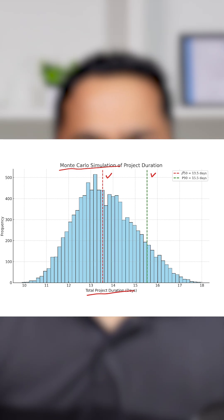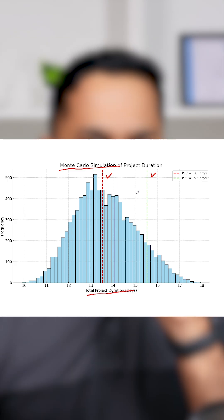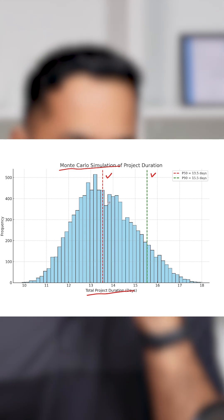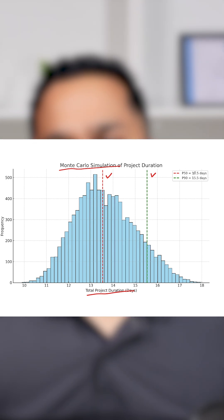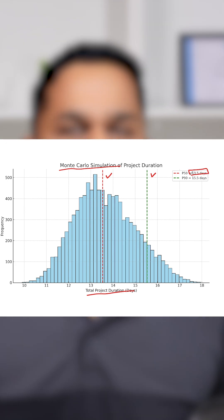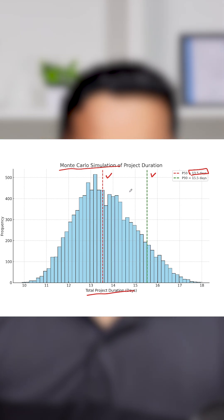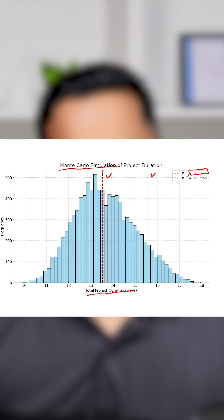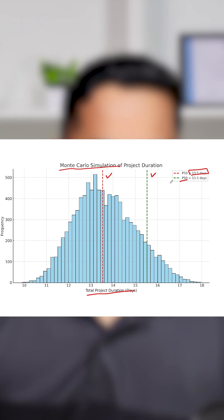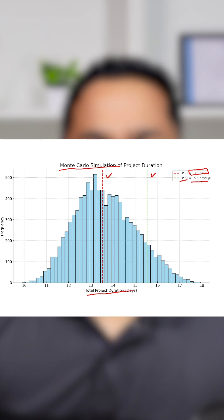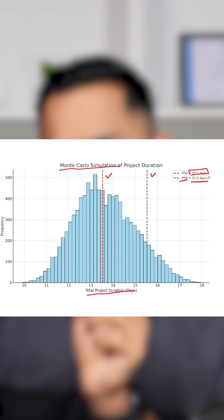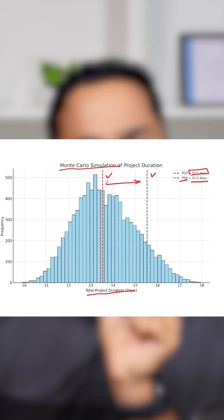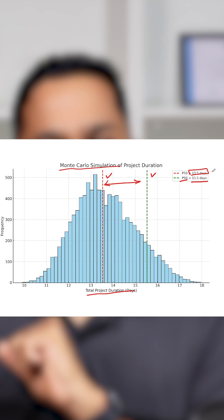The red line talks about P50, which means there's a 50% probability that the project might get completed in 13.5 days. The green line says that there's a 90% chance that the project might get completed in 15.5 days. So now you have an understanding that there's a range of 50% to 90% where my project would get completed between 13.5 and 15.5 days.